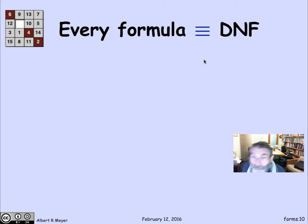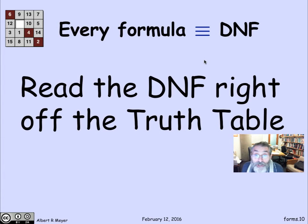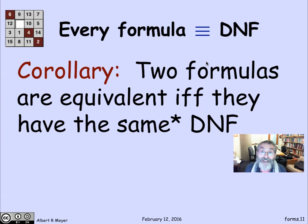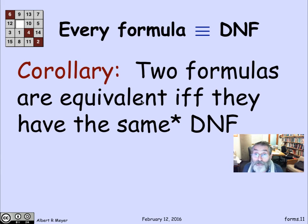What we've just seen is that every formula is equivalent to a disjunctive normal form, because you just read it right off the truth table. This really tells us that the truth table is completely captured by the disjunctive normal form and vice versa — the disjunctive normal form is just a way to write the truth table as a formula. The corollary is that if two formulas are equivalent, then they have the same truth table and therefore the same disjunctive normal form, and conversely, if they have the same disjunctive normal form, they're equivalent.